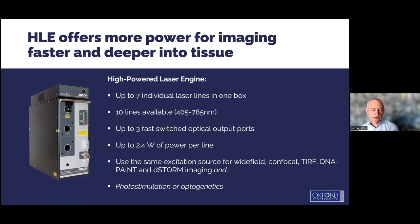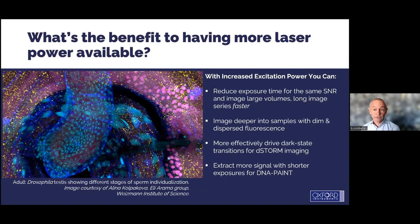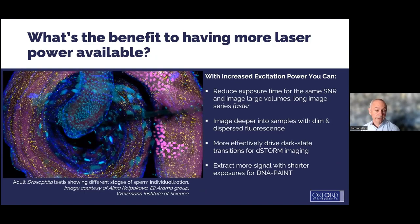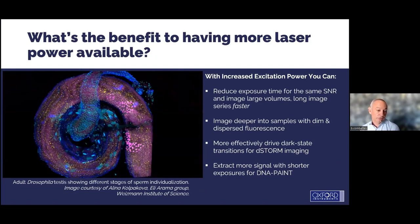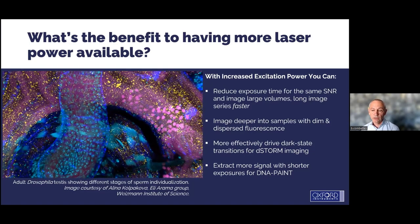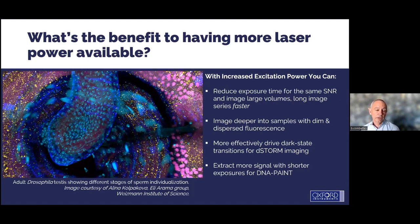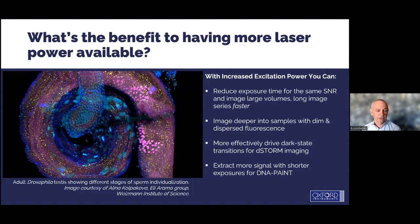The system covers confocal imaging, wide field, TIRF, single molecule localization, photo stimulation, FRAP, optogenetics, and more. The benefit of having high power lasers is that for fixed samples you can increase laser power and decrease exposure time to speed up acquisition. Going deeper into the sample is also easier, and for single molecule localization, more photons means better blinking and therefore more accurate localization.